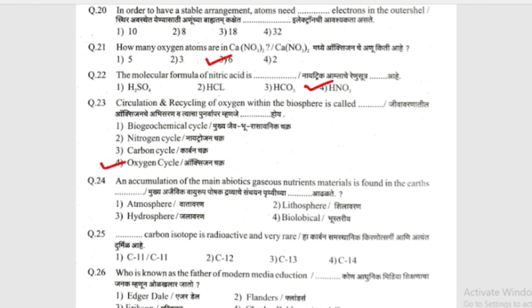The next question: an accumulation of the main abiotic gaseous nutrients materials is found in the earth's what? The answer is the atmosphere.